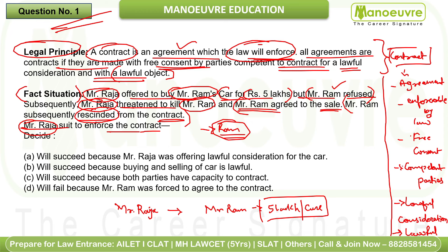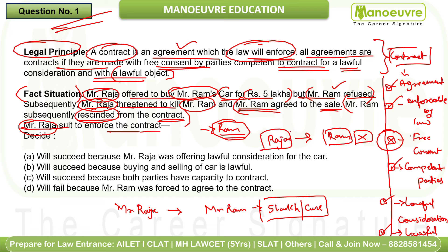Use the principle as a checklist: Is there an agreement? Yes. Is it enforceable by law? Yes. Is there free consent? No. All elements must be present for it to be a valid contract. Competent parties? Yes. Lawful consideration? Yes. Lawful object? Yes. But free consent is missing. Because there is no free consent — Ram was threatened — he resigned the contract. Raja cannot force Ram into the contract.